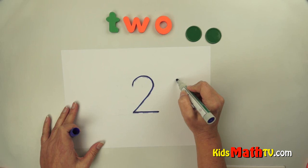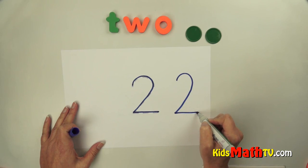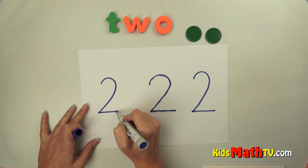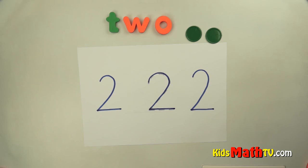Try another one. Up and around, down, two. Up and around, down, two. So the number two.